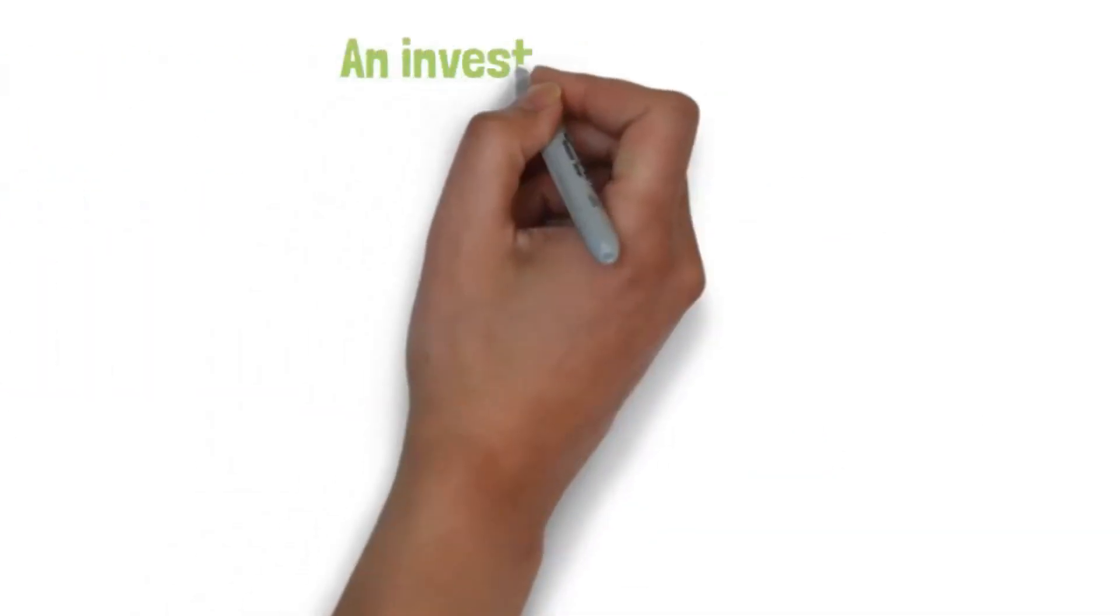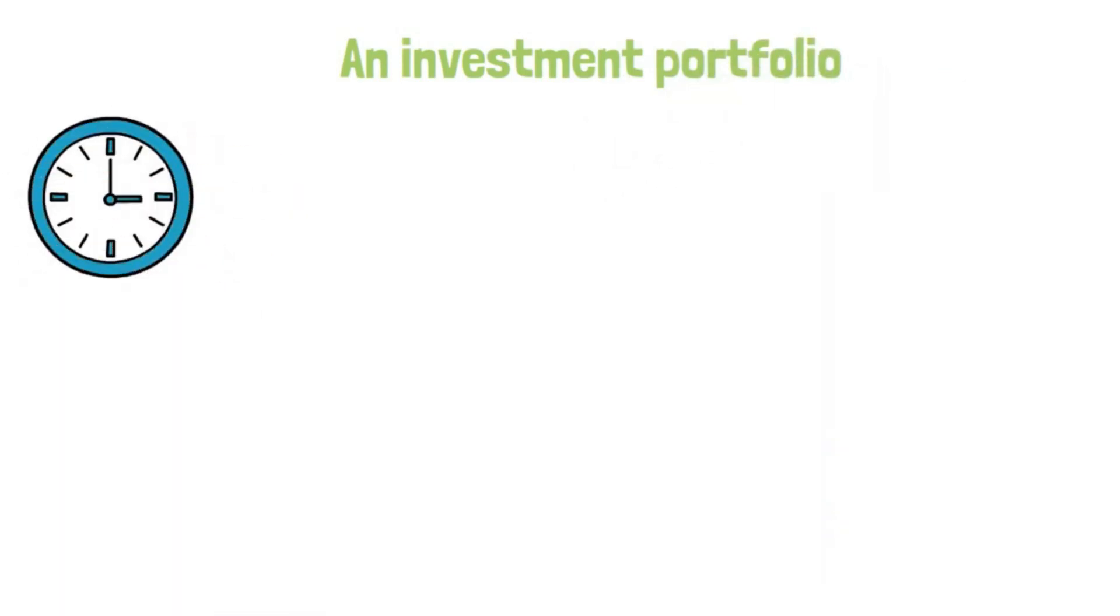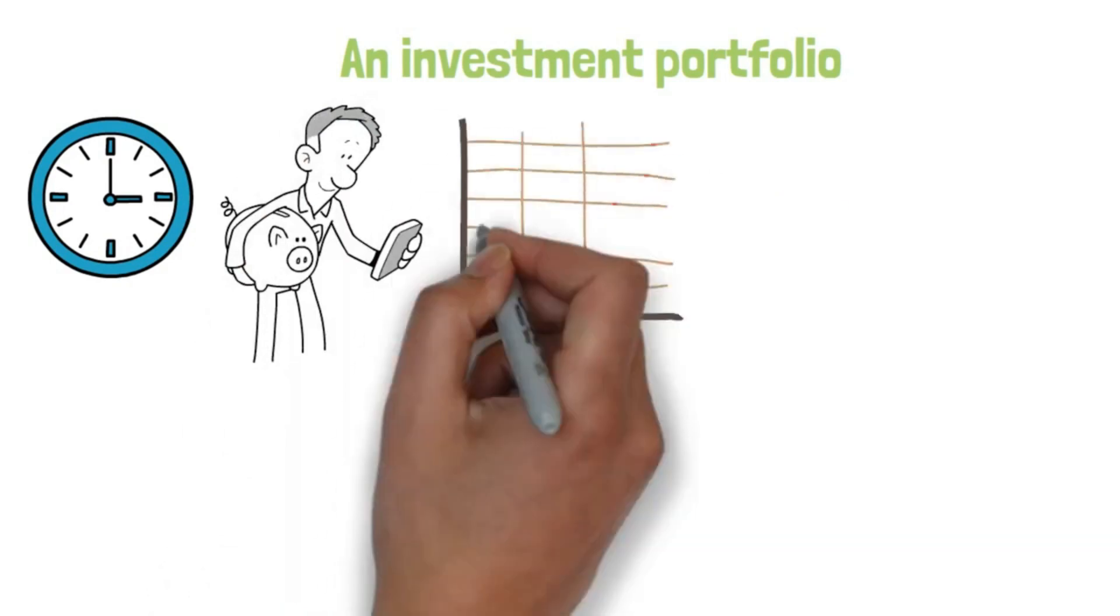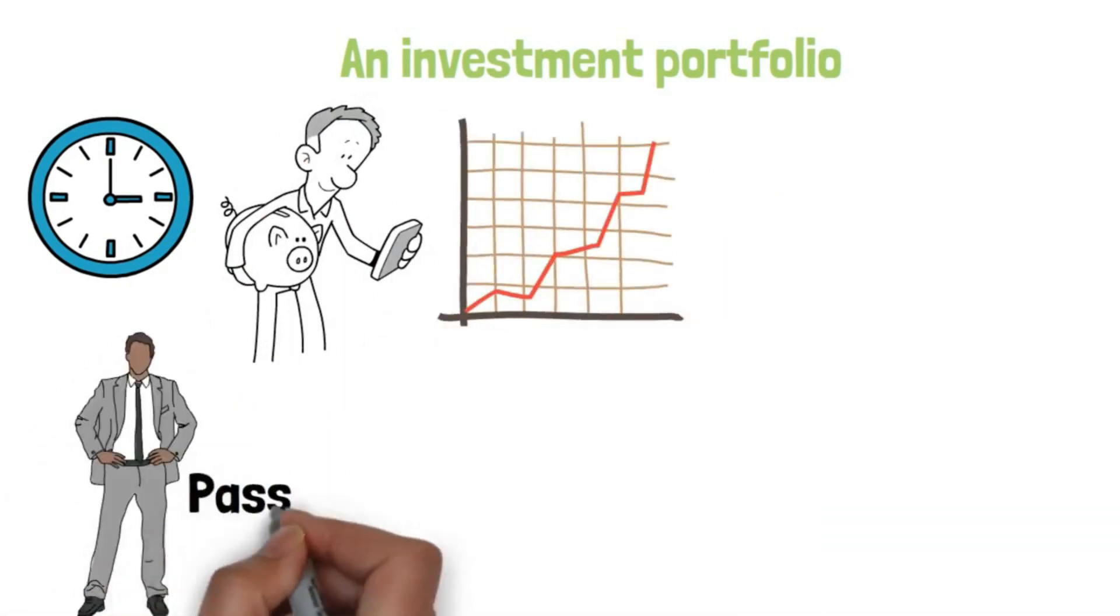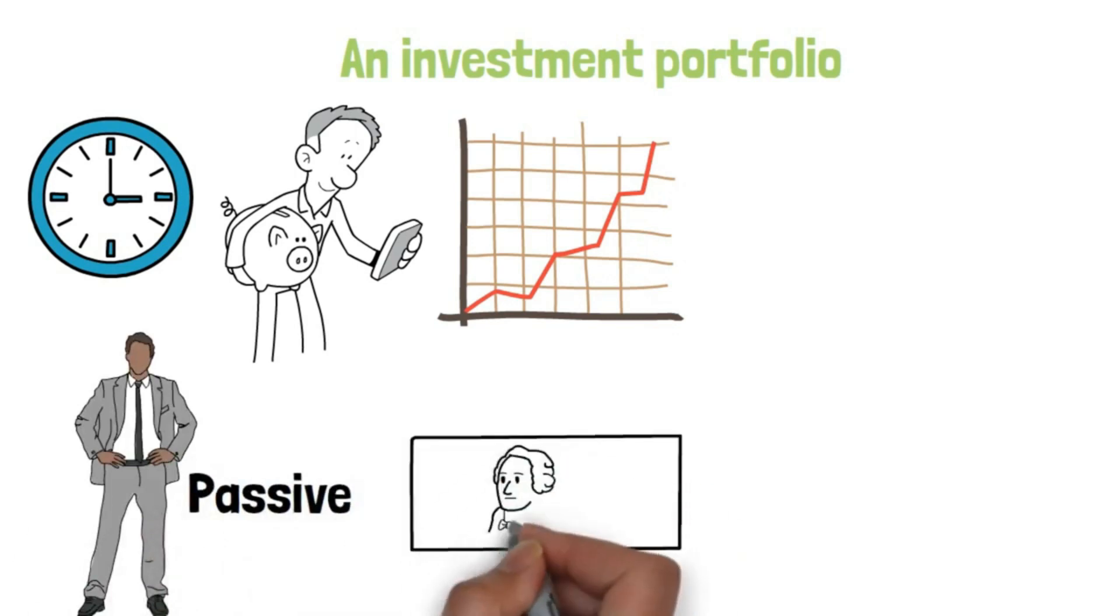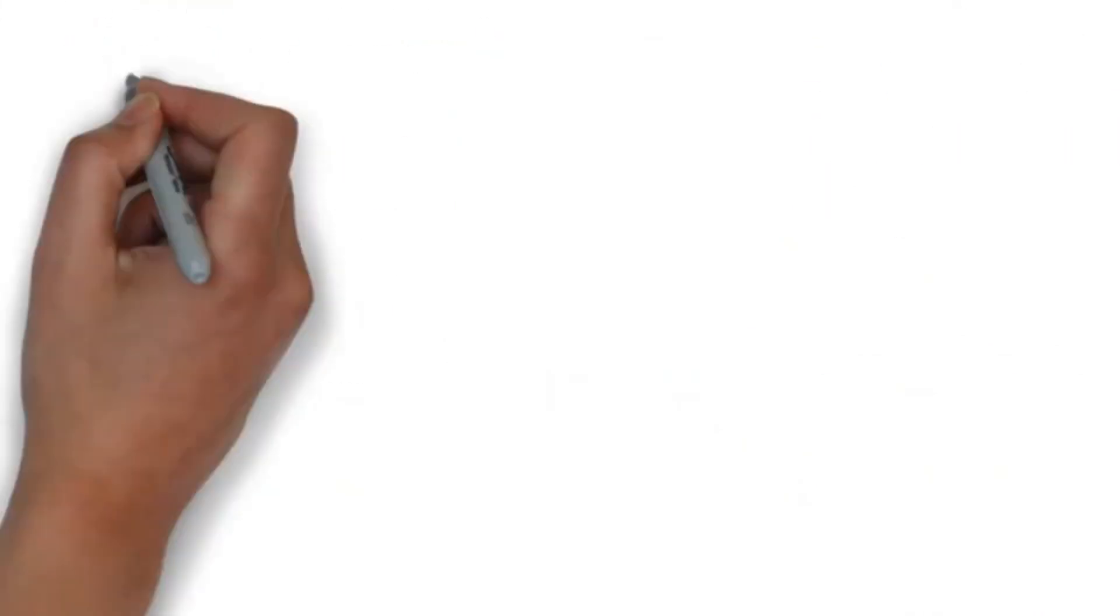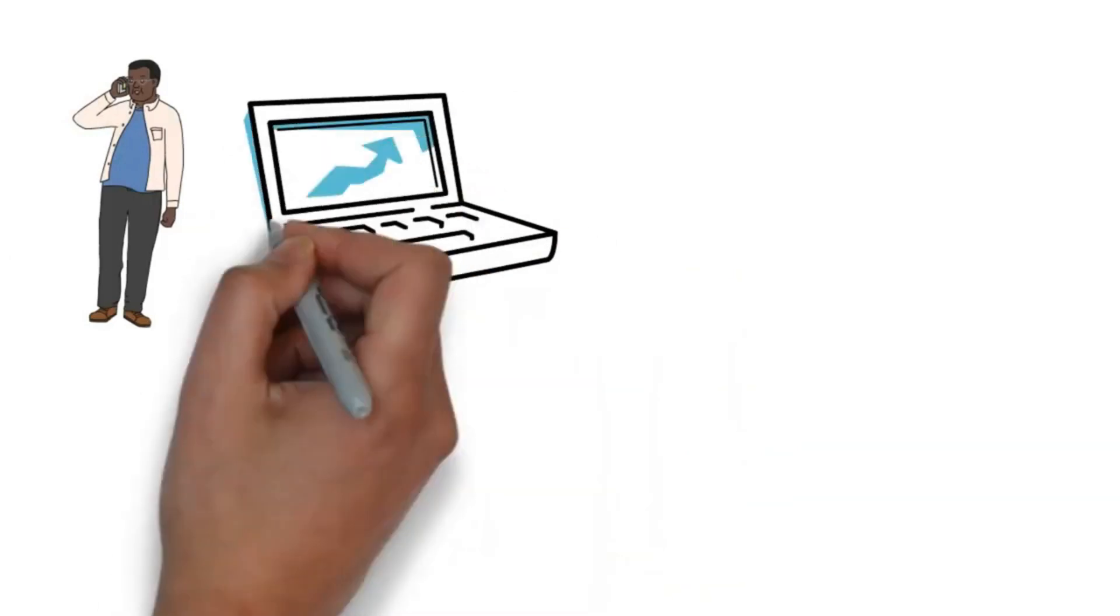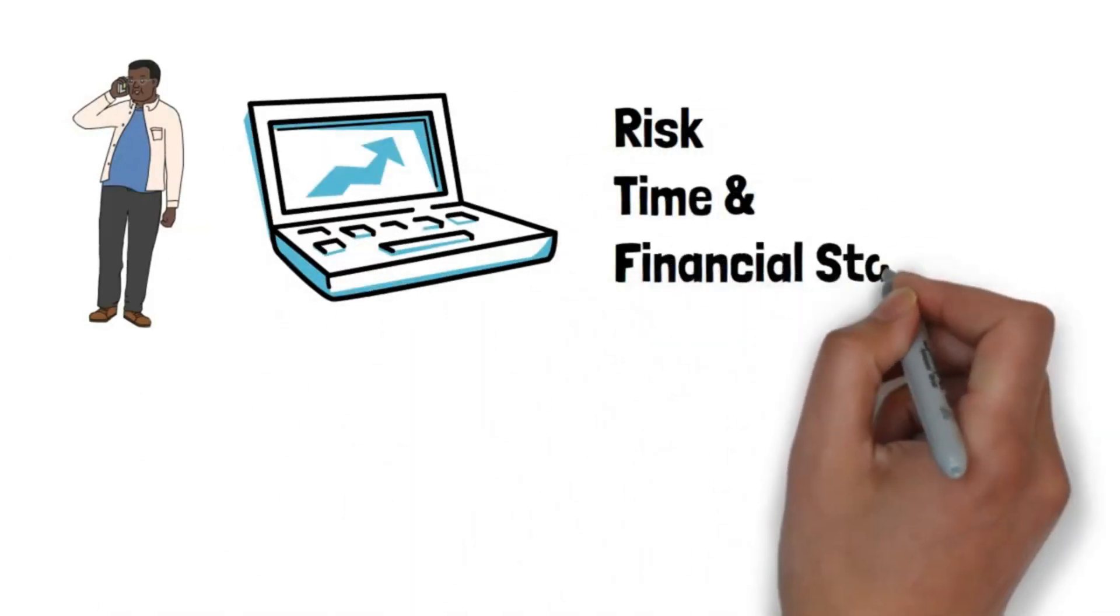An investment portfolio. Because SIP is consistent and regular, investors in such programs should have an investing portfolio in which they invest on a regular basis. Most SIP investors prefer passive investing in which they invest a certain amount of money on a regular basis in a portfolio of index funds or ETFs. They can accomplish this through a digital wealth manager, who designs portfolios tailored to an investor's risk tolerance, time horizon, and present financial status.